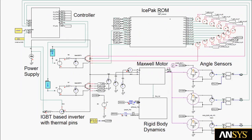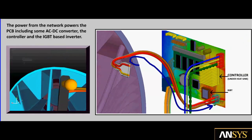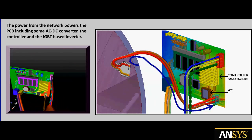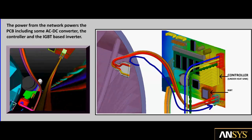We first consider the power supply in the ANSYS Simplora system simulation. The power is supplied to the IGBT inverter modules and the controller. The power from the network powers the printed circuit board including an AC to DC converter, the controller, and an IGBT-based inverter.